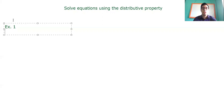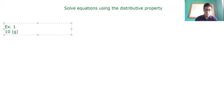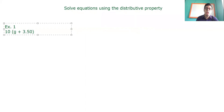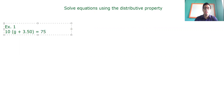So what is the equation that I'm going to write? 10 graphic novels multiplied by G — that is the original price — plus $3.50, which is the increase in the last few years. So this is going to be equal to $75, which is the total value.